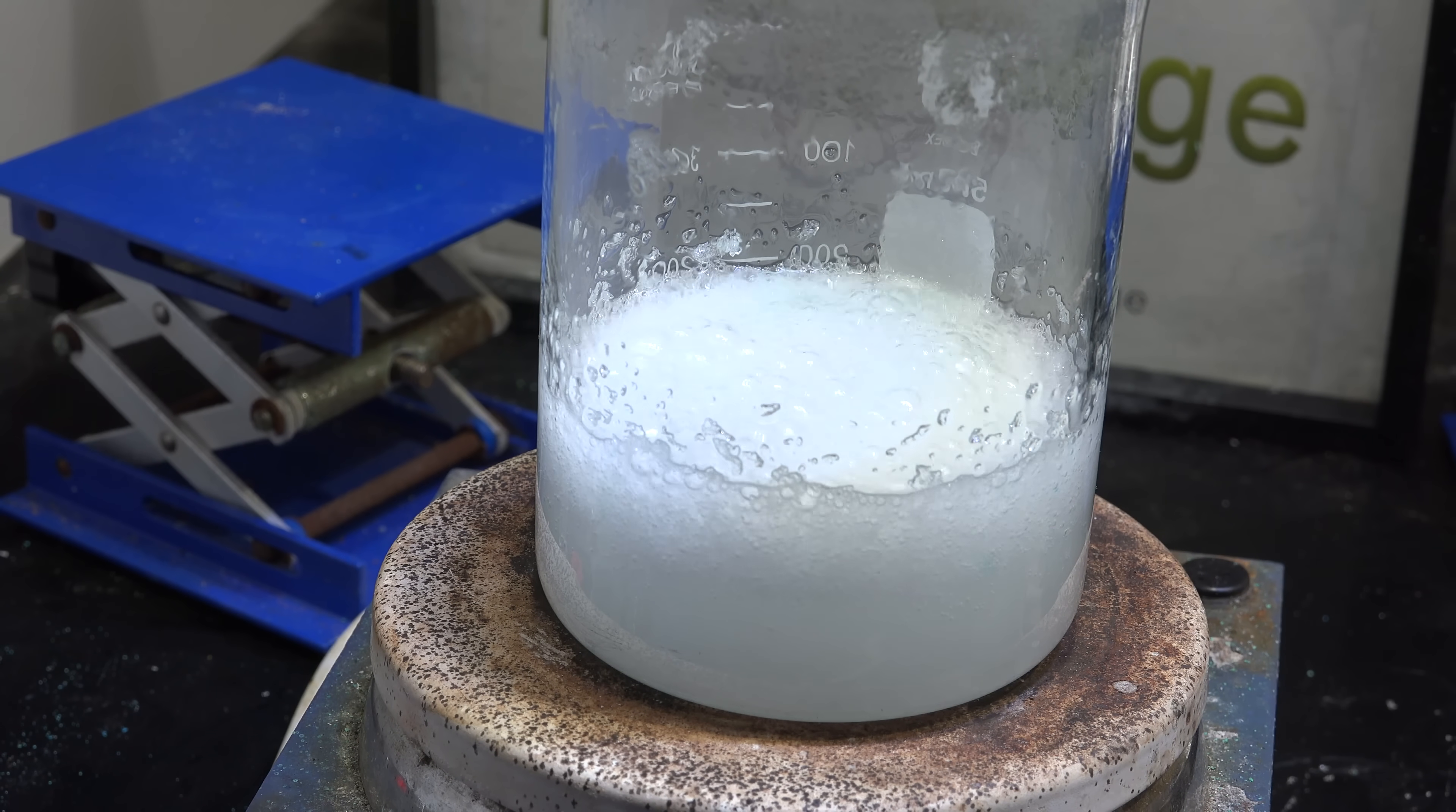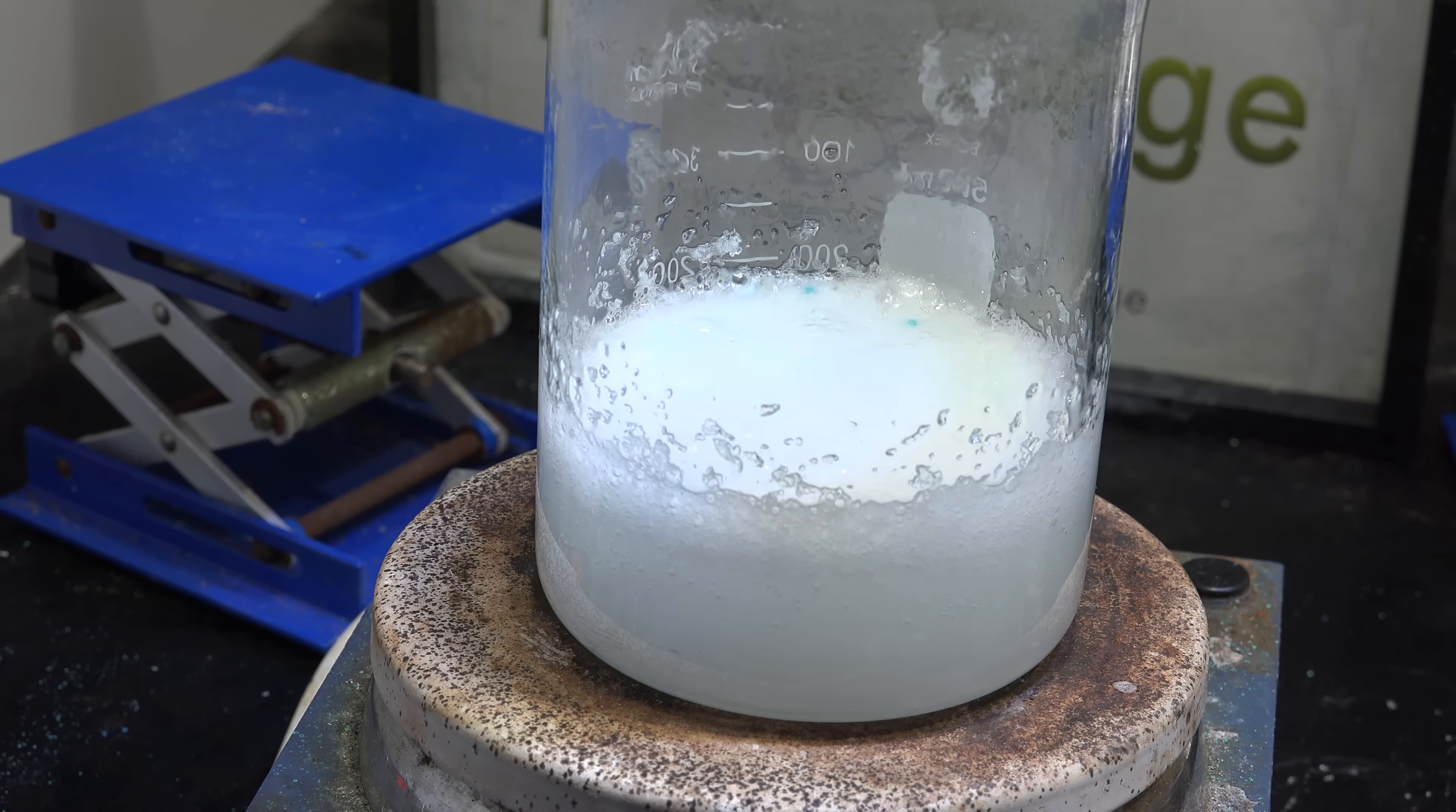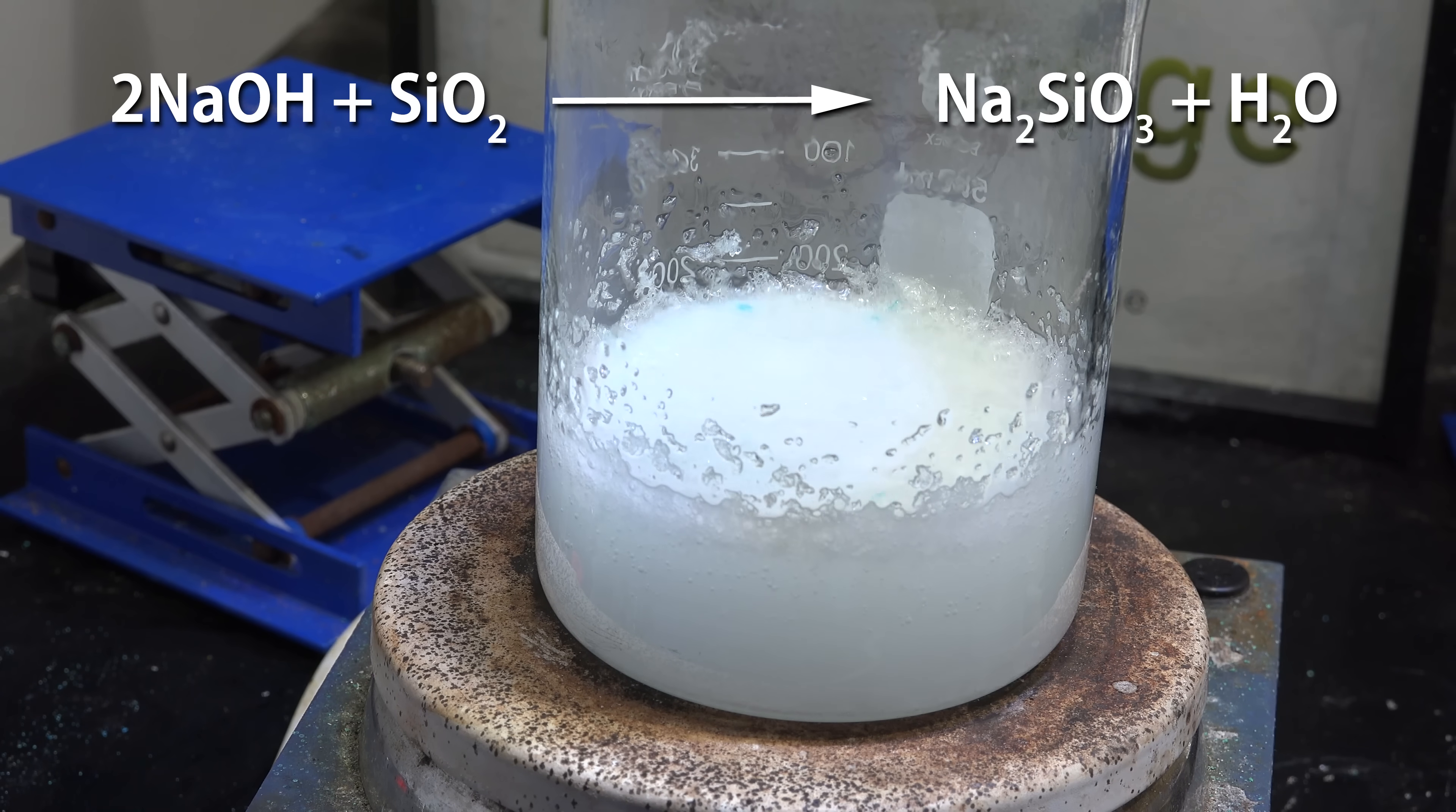So what's happening? Silica gel is essentially amorphous silicon dioxide that's being made by aqueous chemistry. The sodium hydroxide dissolves the silica gel to form sodium silicate.